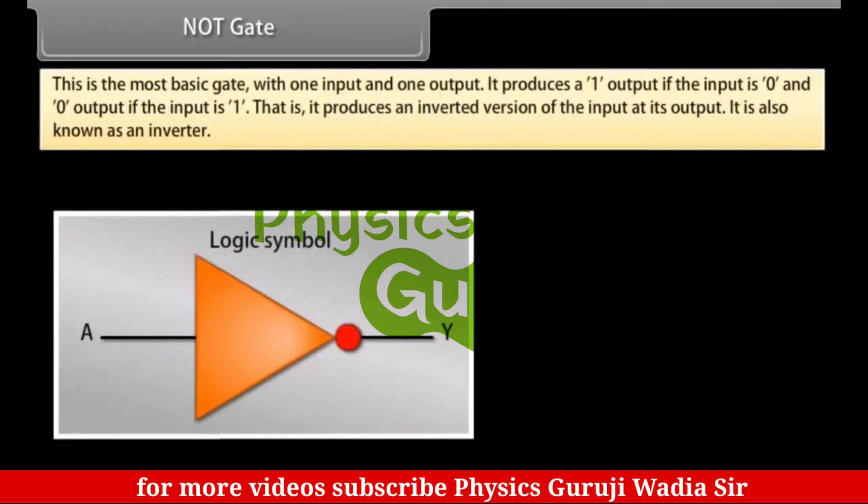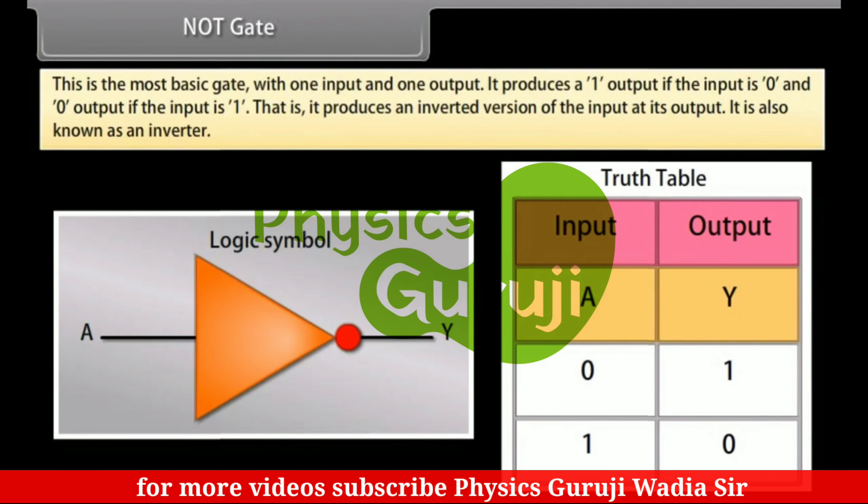NOT-Gate: This is the most basic gate with one input and one output. It produces a one output if the input is zero and zero output if the input is one. That is, it produces an inverted version of the input at its output. It is also known as an inverter.